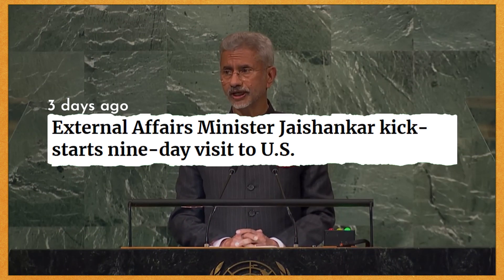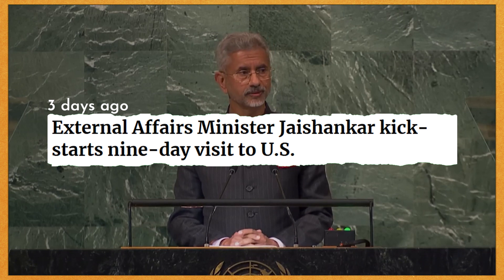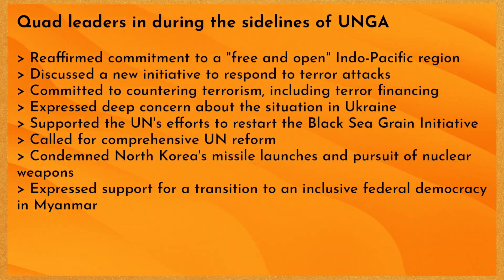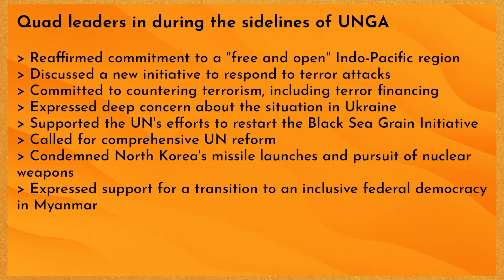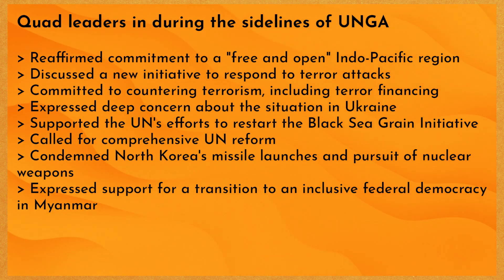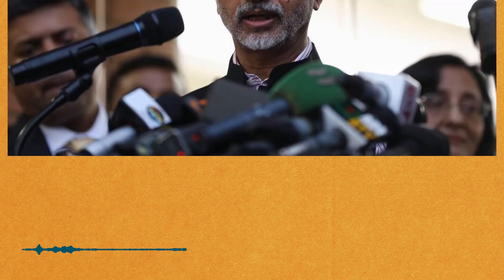Ye next news hai New York se, jahan par Indian External Affairs Minister S. Jaishankar is samay present hain 78th United Nations General Assembly ko address karne ke liye. UNGA ki sidelines mein, Quad countries ke leaders — matlab India, Japan, Australia aur United States — ek doosre se milte hain aur kuch major topics par baat karte hain. Wo Indo-Pacific region ko free and open rakhne ki apni commitment ko re-affirm karte hain, counter-terrorism par baat karte hain, Ukraine situation par discussion karte hain jismein wo Russia ko mention nahi karte, Black Sea Grain Deal initiative ko restart karne ki baat karte hain, aur United Nations Security Council ko reform karne ki baat karte hain. S. Jaishankar Tuesday yaani ki kal United Nations General Assembly ko address karenge.